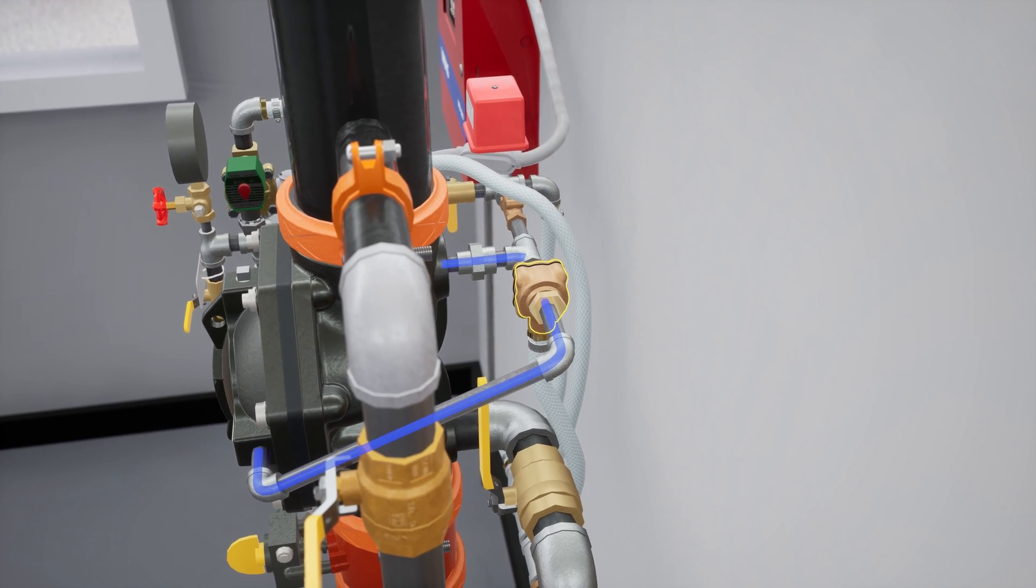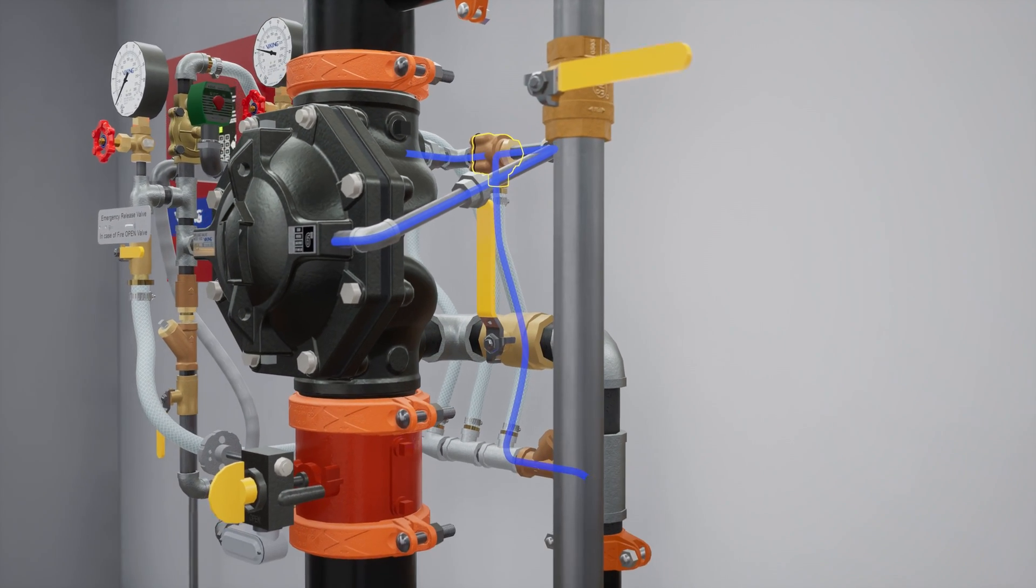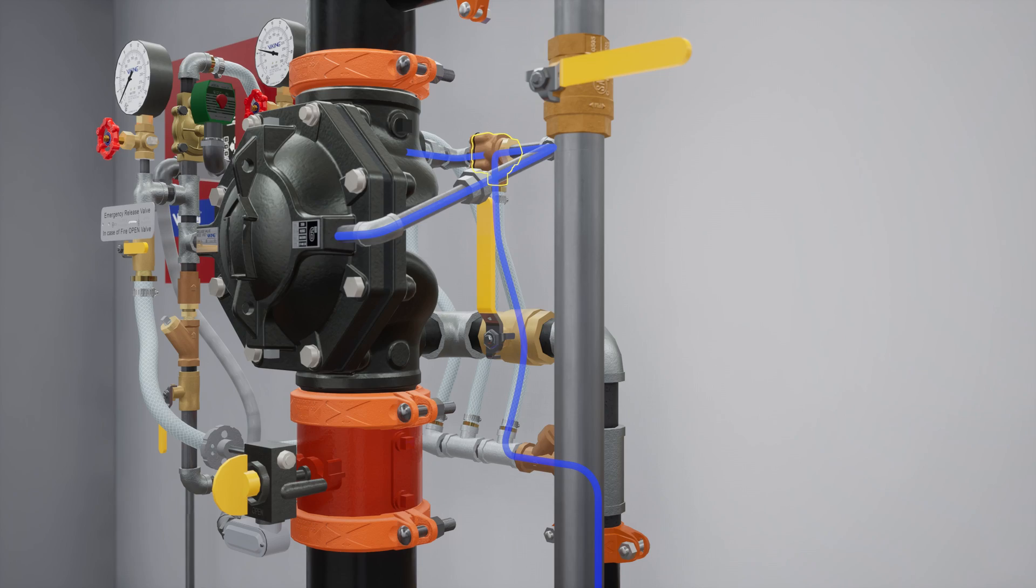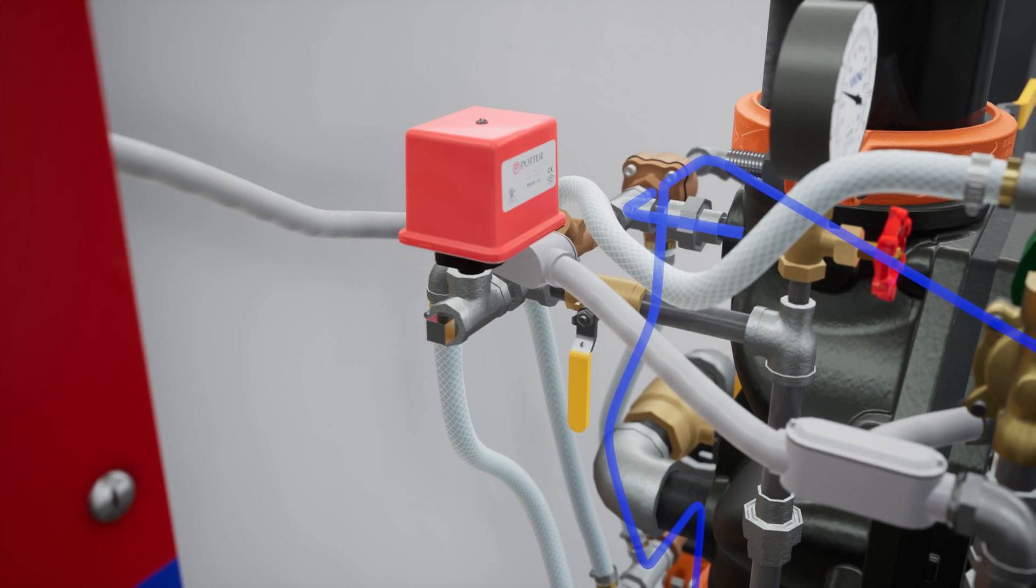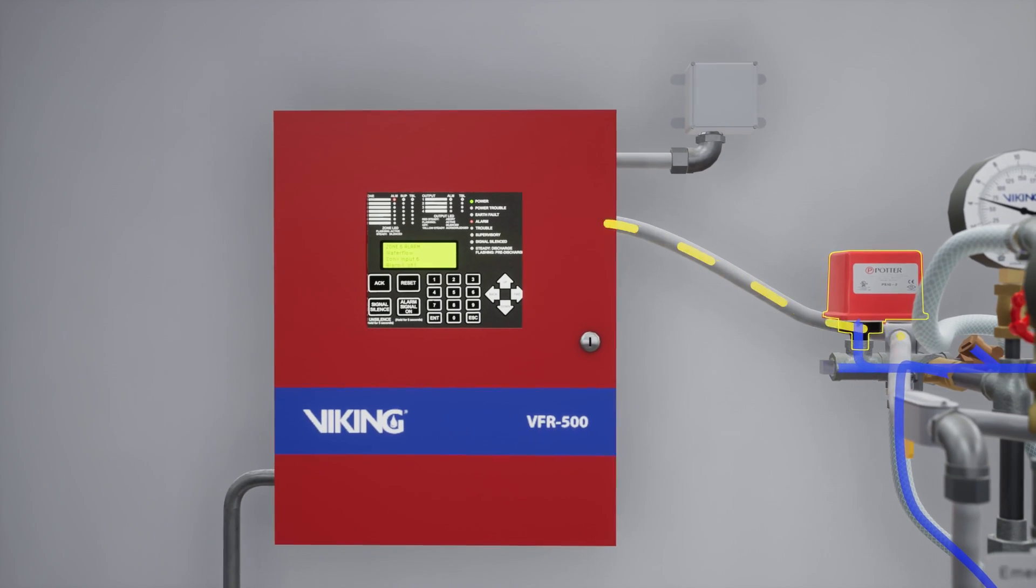The PORV is activated when water from the main supply forces the pushrod open, redirecting prime water out into the drain. Simultaneously, water will also fill the trim leading to the water flow alarm, causing it to activate, alerting the VFR-500 release control panel.